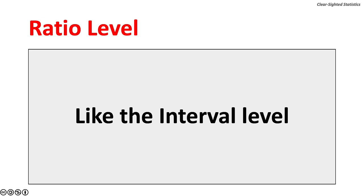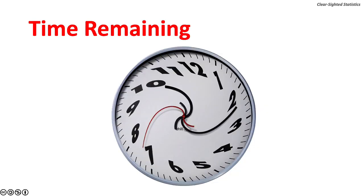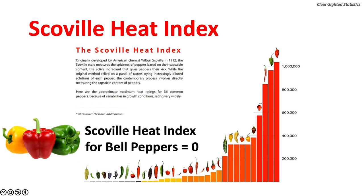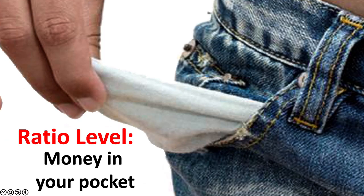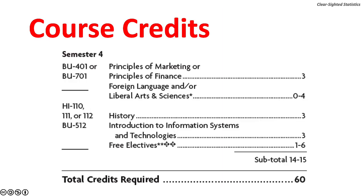The ratio level is the highest level of measurement. It is just like the interval level with one key addition: the ratio level has a non-arbitrary zero. The addition of an absolute zero allows for the calculation of ratios. Time remaining in a class is a ratio measure — when there are only 10 minutes left, half the remaining time is 5 minutes. The Scoville Heat Index for peppers and the money in your pocket are ratio measures. Course credits is also a ratio measure because it is possible to have zero credits.